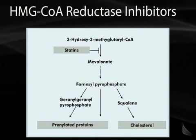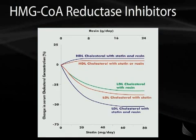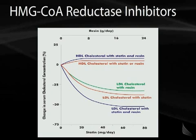Certain inflammatory proteins rely on this prenylation in order to do their job. As you can see from this slide, as the dose of the statin increases, the cholesterol level goes down, especially when statins are given along with a bile acid binding resin. Over time, HDL will also slightly rise. Both of these effects are very good for preventing atherosclerosis.